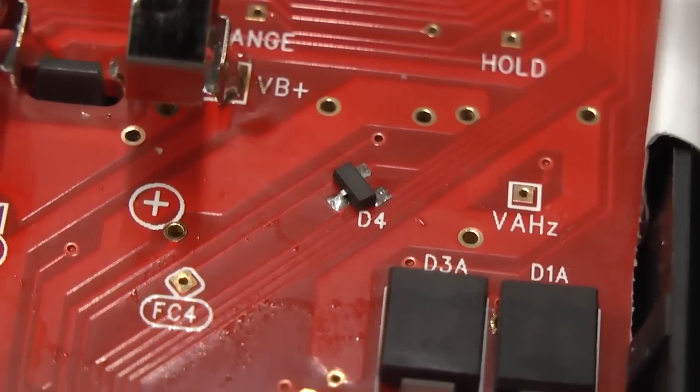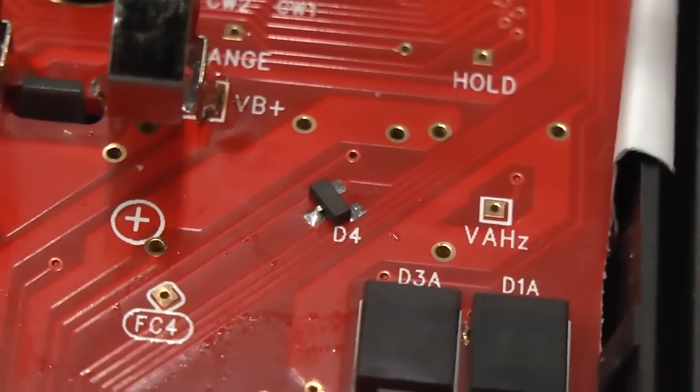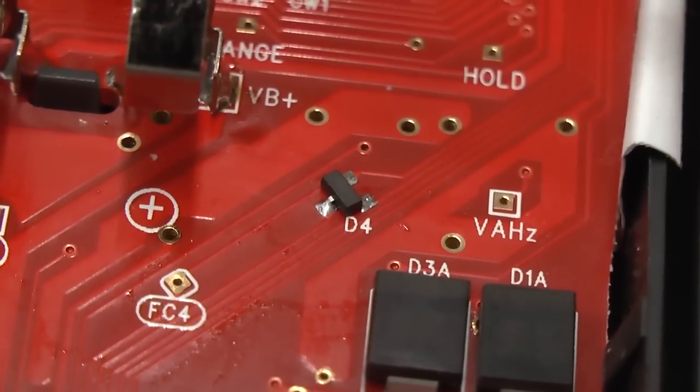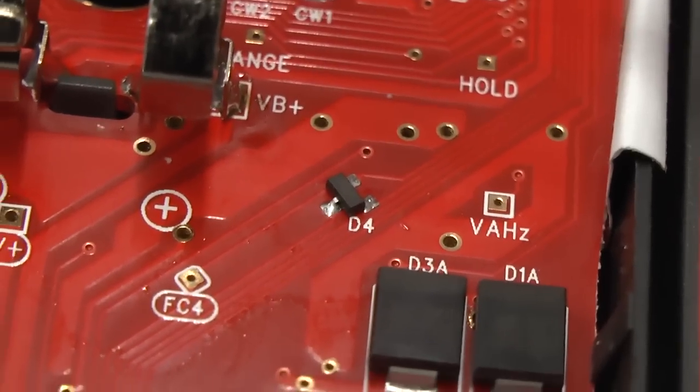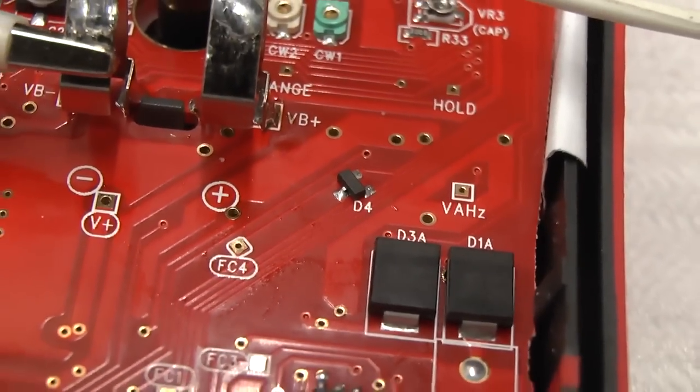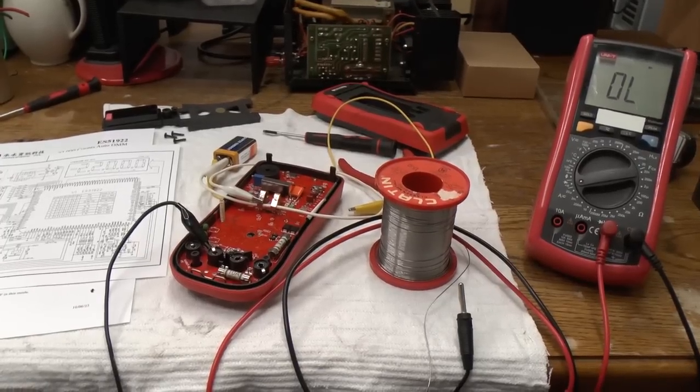Those were kind of inconclusive. Depending on the selected mode, it would either show up as shorted, partially shorted or open. So I guess I'll just unsolder that thing from the circuit board. I think I found the problem.